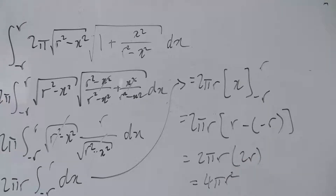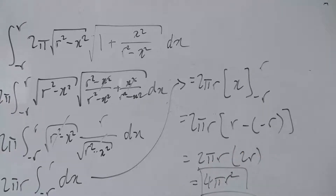And that gives 4πr², which is the surface area formula for a sphere, as expected. That's how you derive the formula for the surface area of a sphere using surfaces of revolution.